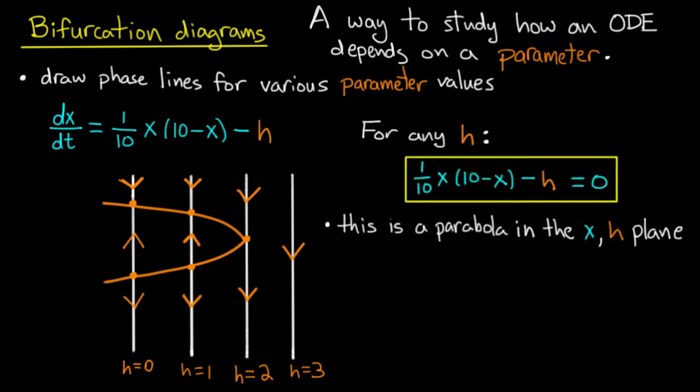And how do I know it's a parabola? Well, it's exactly described by this equation: 1/10 x times 10 minus x minus h equals 0. And that is a parabola in the x comma h plane. So if I draw on these axes here,